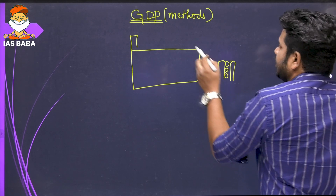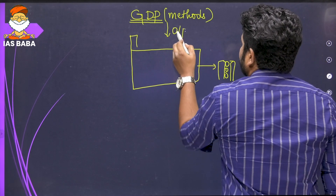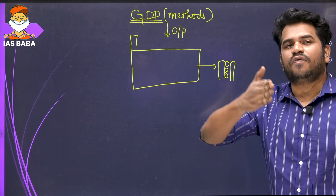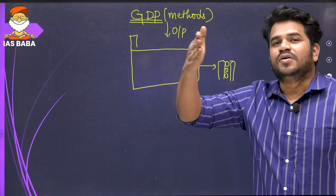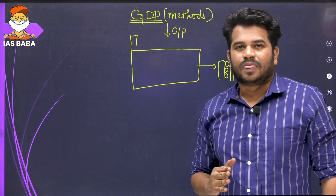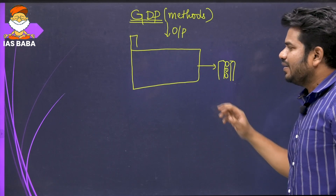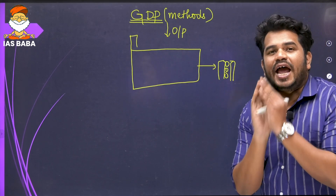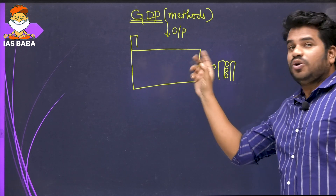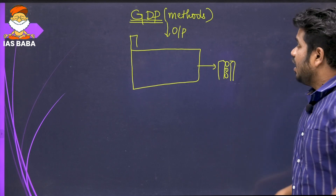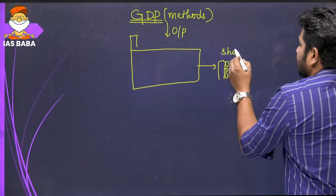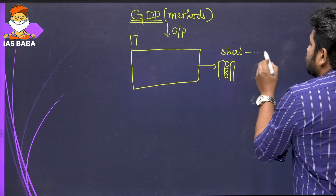GDP is nothing but measuring the output of a country — measuring the monetary value of the output of all the goods and services produced in my country. Let us assume that this is the only firm in my country, and I have to calculate the GDP of the country, meaning I have to calculate the output of this firm. Let us assume this firm is producing a shirt and this shirt is sold to a consumer.